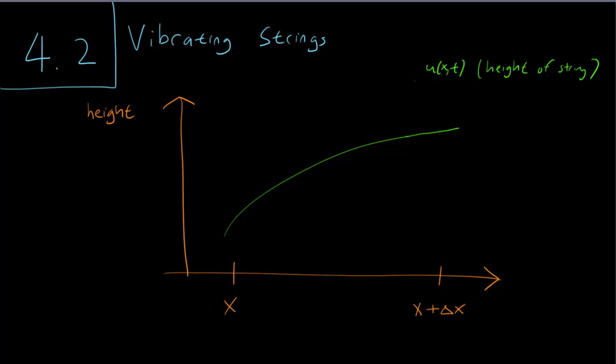We have this function u which tells us the height of the string at location x at time t. You may imagine that our string is actually tied to a post at both ends, and we're looking at a tiny little section of it here. This is our x and x plus delta x. We're zooming in this way, looking at a small section of the string.